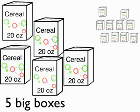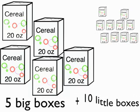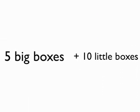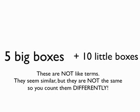That's better. So notice that even though they are both boxes of cereal, Mike put them into two different piles. We can see that there are five big boxes and ten little boxes. So that's the answer: How many boxes of cereal are there? Five big boxes and ten little boxes. They're not like terms — a box of cereal seems similar but they're not the same, so we count them differently.